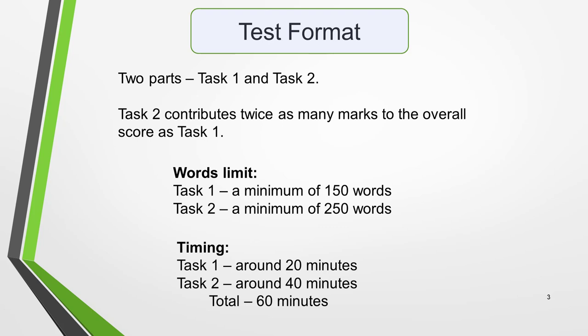First, the format of the test. The writing test has two parts: task 1 and task 2. Task 2 contributes twice as many marks to the overall score as task 1. For task 1 you must write a minimum of 150 words, and for task 2 the minimum word count is 250 words. Task 1 should take you around 20 minutes and task 2 around 40 minutes, making a total test time of 60 minutes.